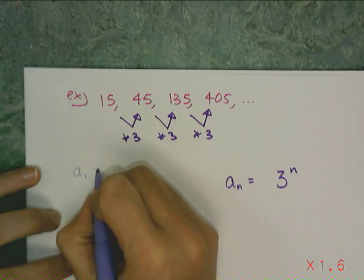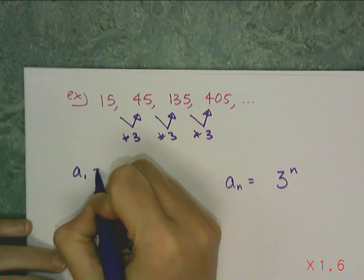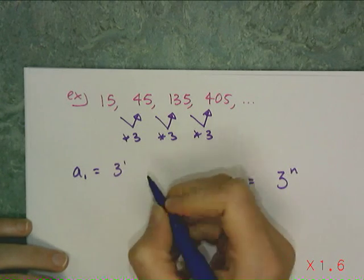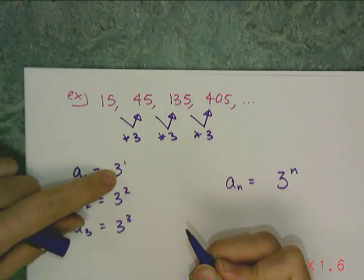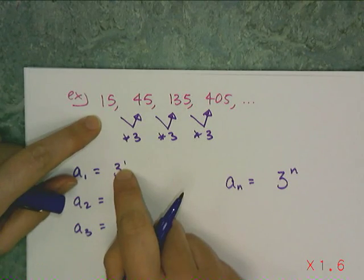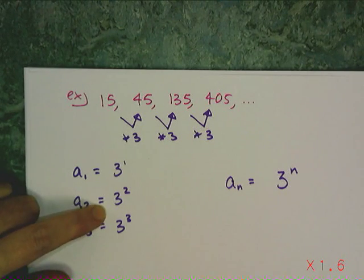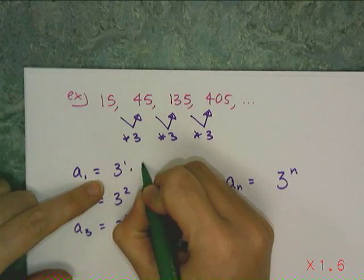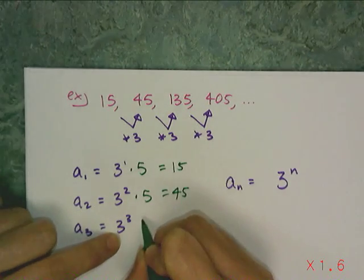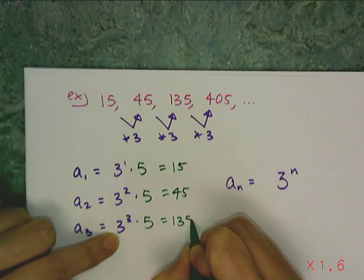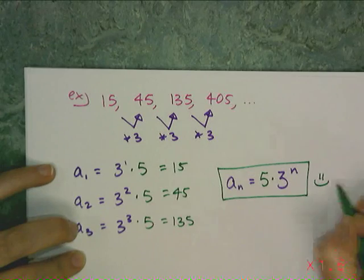Now I just have to figure out if it works right. And if it doesn't, what I have to do to the sequence to make it work. So a sub 1 right now is just 3 to the first power. A sub 2 right now is just 3 squared. A sub 3 right now is just 3 cubed. Now this is just 3, and I want it to be a 15. So I have to think, well, how do I turn a 3 into a 15? Well I can add 12, but that's not going to help me here because 9 plus 12 is not 45. Or I can multiply it by 5. So 3 times 5 is 15. 9 times 5 is 45. And 27 times 5 is 135. So I figured out what I have to add to my apparent formula, which is a times 5. Box it off. Happy face.